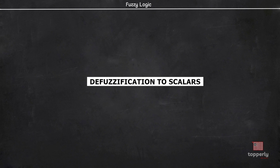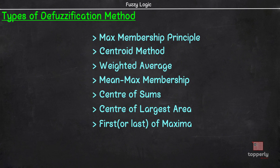Hey everyone, welcome back to FuzzyLogic Lectures. We were learning about defuzzification methods in the last video and so far we learned about max membership principle, centroid method, weighted average method and mean max membership method. Continuing from that, in this video we will learn about the methods of center of sums and center of largest area. So let's start our lecture.